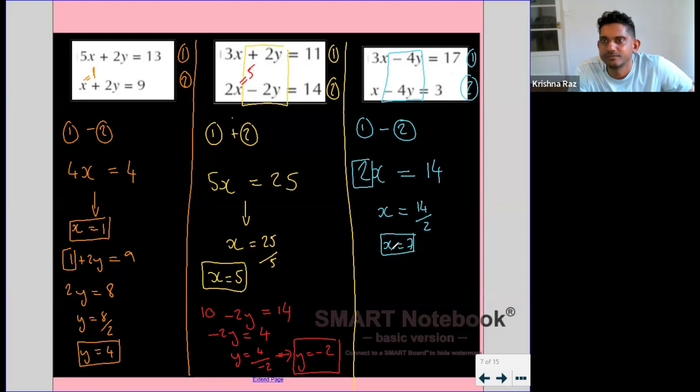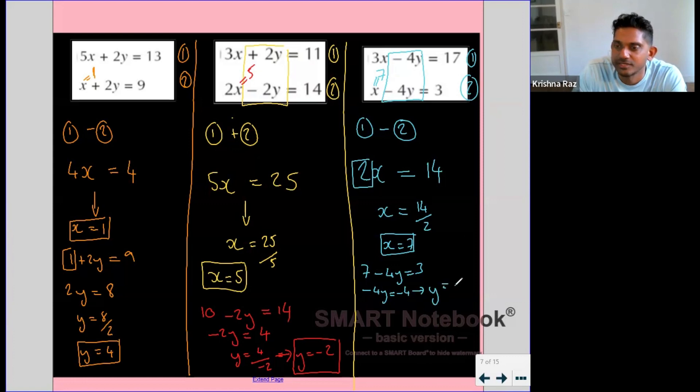Now we know x is 7, I can sub that into the second equation. So I have 7 minus 4y equals 3, so minus 4y equals minus 4, and minus 4 divided by minus 4 is 1, because anything divided by itself is 1.